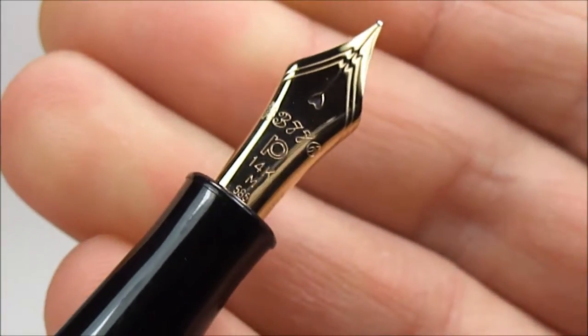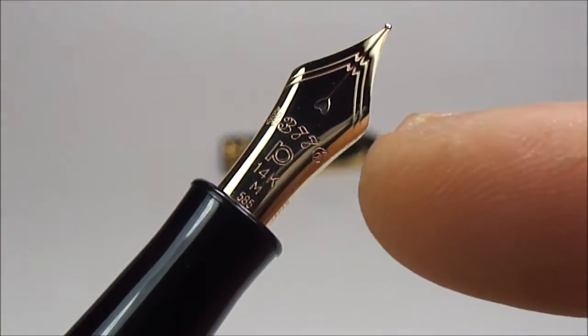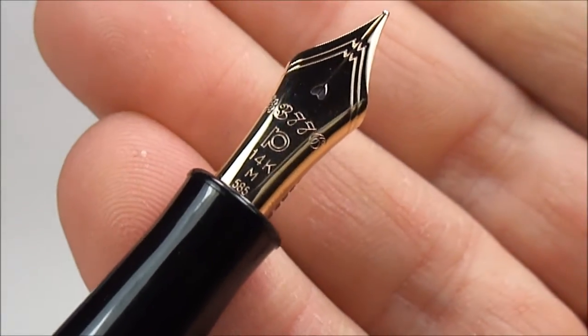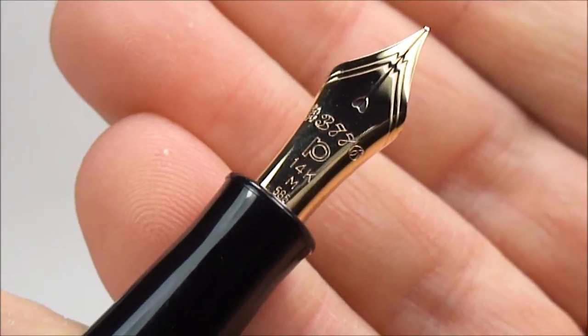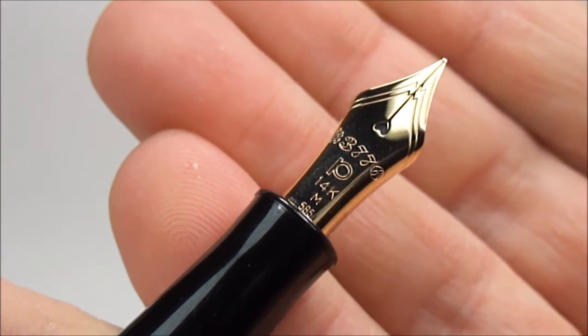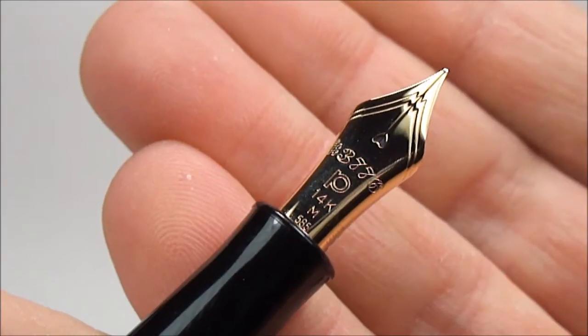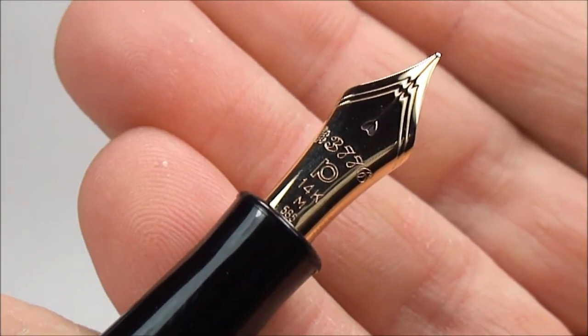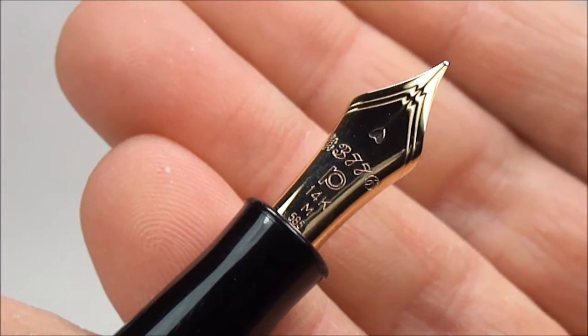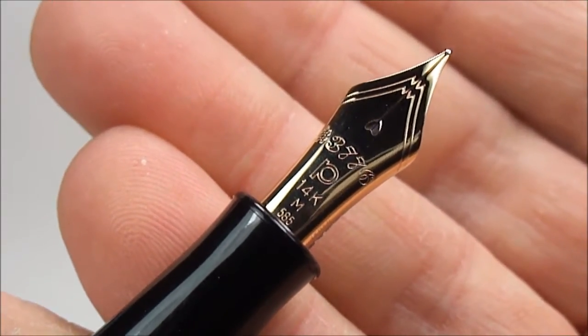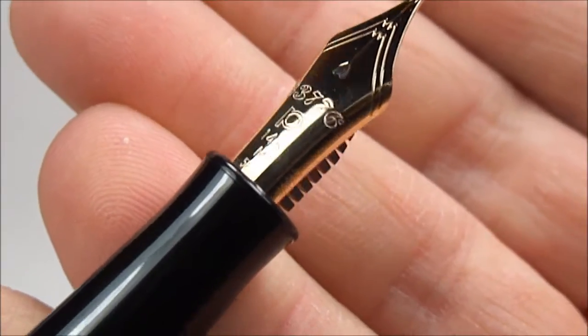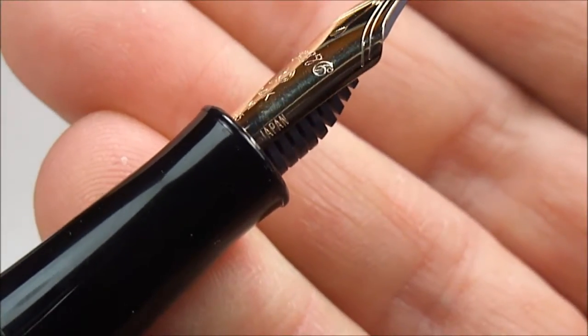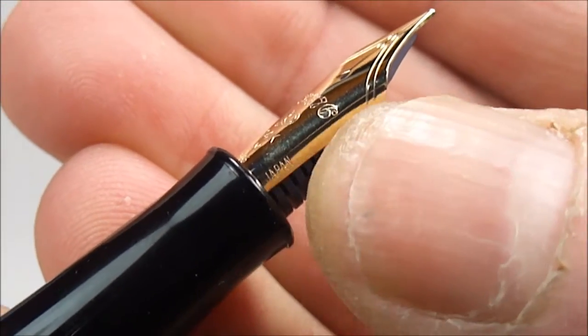You'll see it's quite large at the shoulders as well, and the markings on this particular nib is actually 3776, it's got the letter P for Platinum, underneath that 14 carat and the letter M, and then right at the bottom 585.